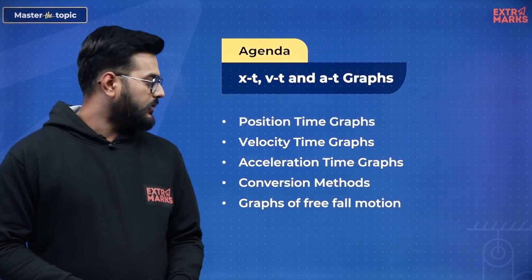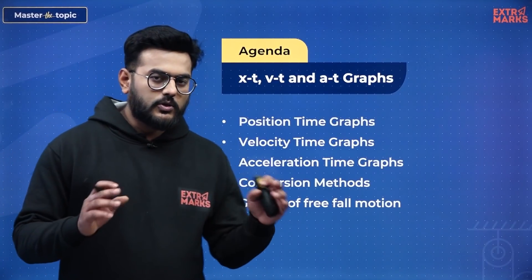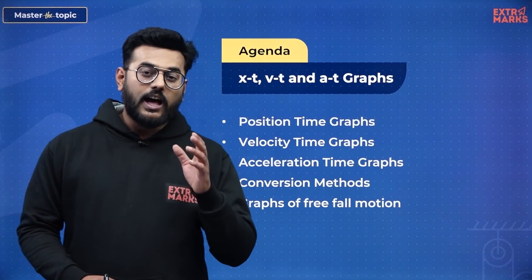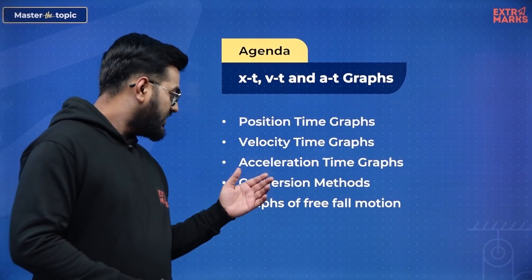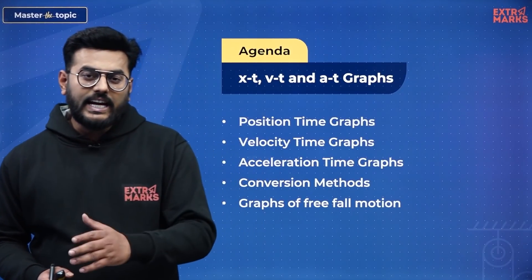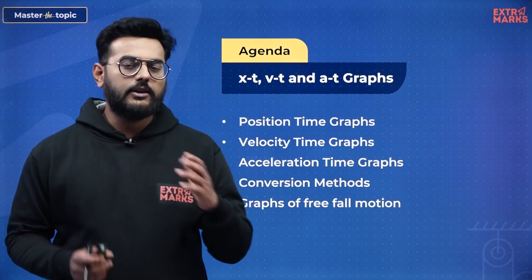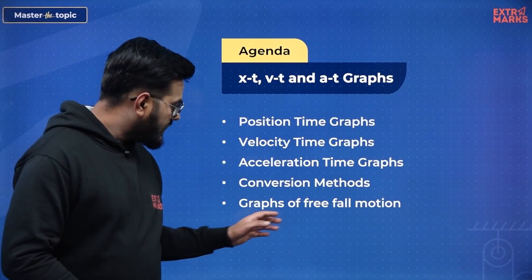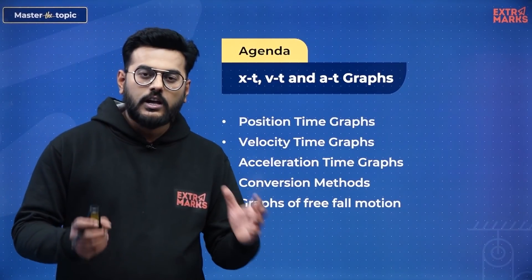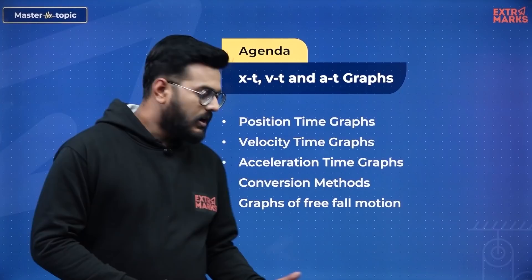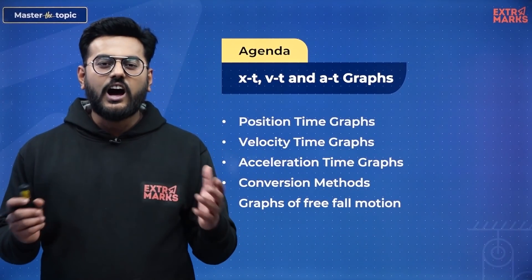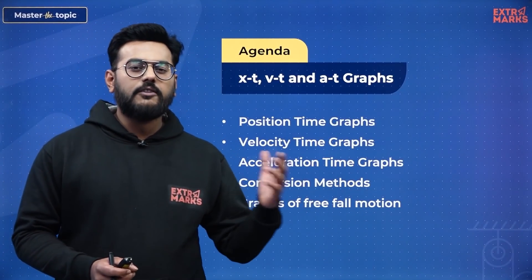So what we are going to discuss in this webisode: there will be a discussion about position-time, velocity-time, and acceleration-time curves. Then there will be a discussion about conversion methods — conversion of AT to VT, then VT to AT. By the end of this lecture, we'll have understood the graphs, and finally we'll talk about graphs of free-fall motion and how they look.